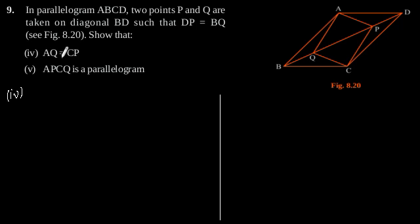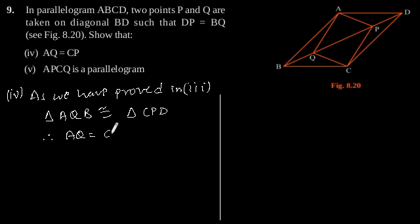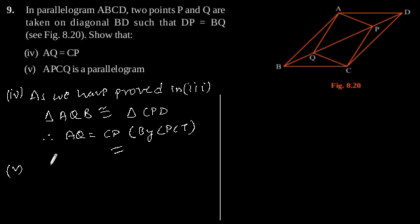Fourth part: AQ is equal to CP. As we have proved in the third part that triangle AQB is congruent to triangle CPD, therefore AQ is equal to CP by CPCT. Hence proved.